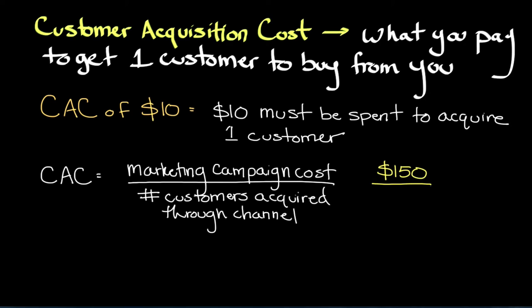Then we'll need to determine the number of customers that we acquired through this channel. To do this, we would need to track what's called a conversion rate, which is the percentage of customers that did something meaningful. This can be signing up for our email list, making a donation, or even purchasing something from us. It's important that we isolate the number of customers acquired through Facebook from other channels, otherwise it's not a true measure of customer acquisition costs for this channel.